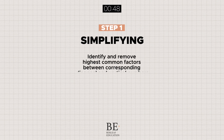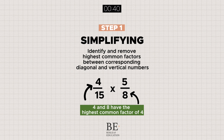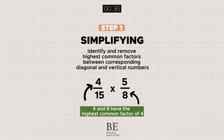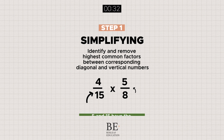Start off with simplifying the fractions by removing their highest common factors, diagonally and vertically, if any. In this example, we can see that 4 and 8 have the highest common factor of 4, while 5 and 15 has that of 5. These highest common factors are removed by way of division.